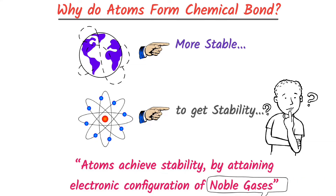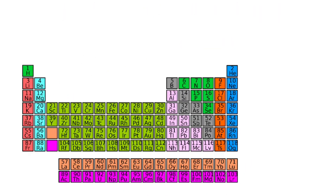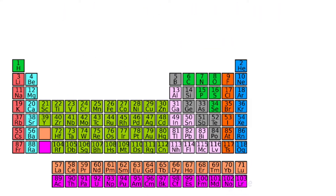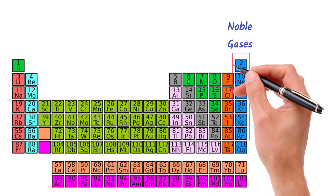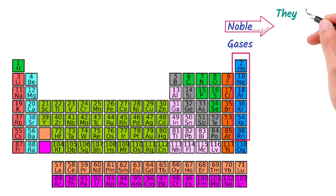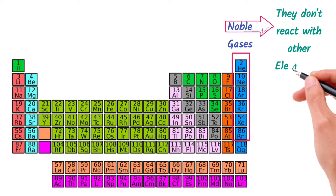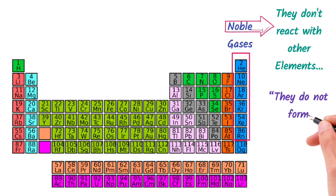What are noble gases? They are a group of elements on the periodic table that include helium, neon, argon, krypton, xenon, and radon. They are called noble because they don't react easily with other elements — in simple words, they do not form chemical bonds with other elements.